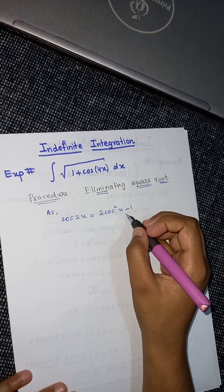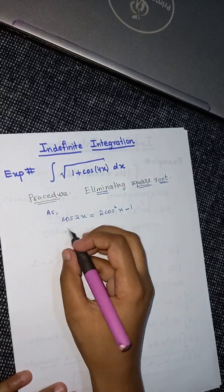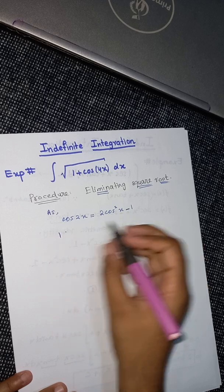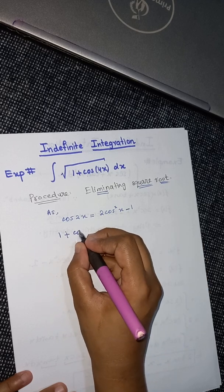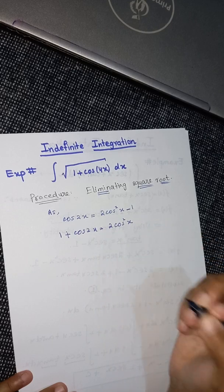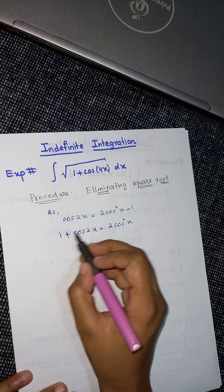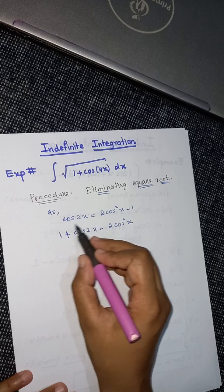If you compare it with the function inside, if I add one on both sides then I will get 1 plus cos 2x equals 2 cos squared x. If I add one on both sides, I will get 1 plus cos 2x equals 2 cos squared x.